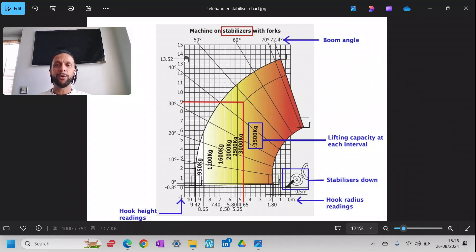Along the y-axis you've got your height, and then these lines here is your boom angle: 60 degrees, 50 degrees, those are your angles. So looking at this red line I've drawn in here, this telehandler will lift 3.5 ton, 3,500 kilos, at 4.65 meter radius.